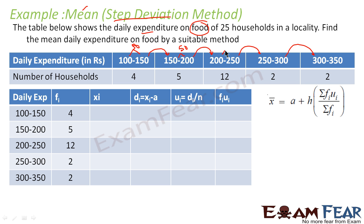Now for this, the formula is x̄ = a + h × (Σfiui / Σfi). First thing we need to find xi.